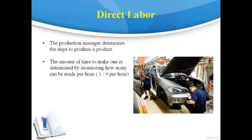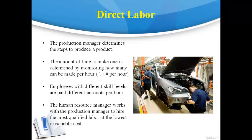For instance, if 10 products are made in an hour, then it takes 1 divided by 10, or .1 hours, to make just one. The time to make one is stated on the cost sheet. Each skill level of labor is generally paid a different amount per hour. The production manager works with the human resource manager to hire the most qualified workers at the best cost per hour.